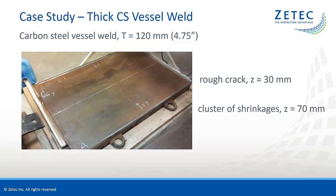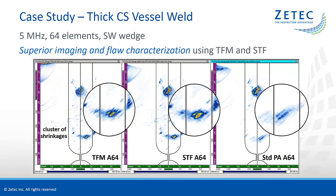The next case study explores the potential of advanced focusing techniques on thick carbon steel vessel welds, from 3 inches and up. Code-compliant phased array UT and TOFD can provide adequate detection, but characterization of deeper indications can sometimes be challenging. The considered specimen is a thick carbon steel weld containing real flaws — a rough crack and a cluster of shrinkages located at different depths in the weld.